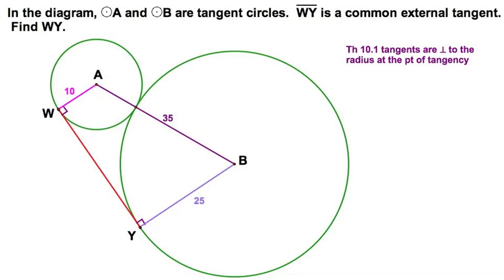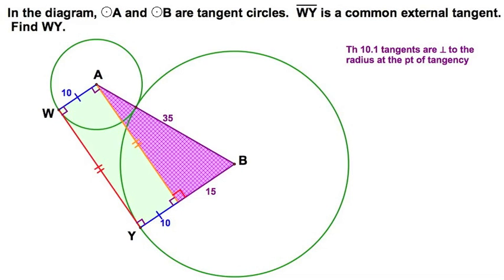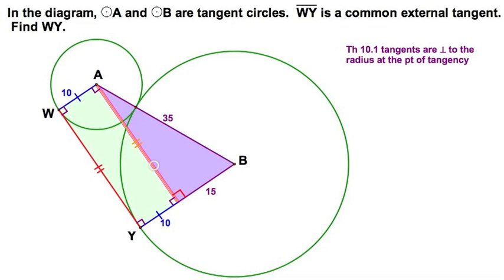And we carve that trapezoid up into a rectangle and a triangle. Now knowing our properties of our figures, we just drew this auxiliary line here. Why? Because we can. And we're now going to solve for this orange side. If I focus on this triangle, I can solve for this orange side, which must be congruent to this red side. And this red segment is our common external tangent. We're going to do this two ways.